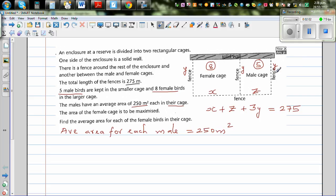What's the total area of this cage? So the area of this cage would be 250 times 5, which is 1250 meters squared.